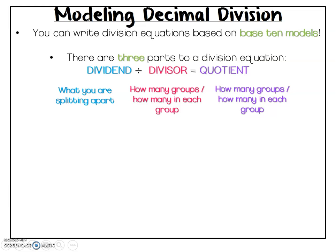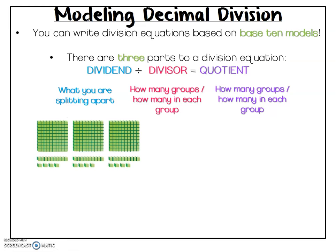So let's take a look at a decimal division model. You might see something like this. I can see that I clearly have base 10 blocks that are set up in three equal groups.